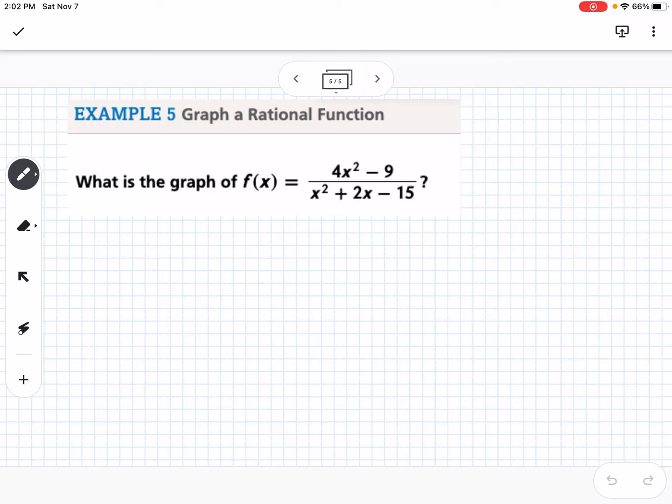The final example is another graph. This one's a little more complicated. Starting with the vertical asymptote, I need to factor the denominator. This would factor to x plus 5 and x minus 3. So my vertical asymptotes would be at negative 5 and positive 3.